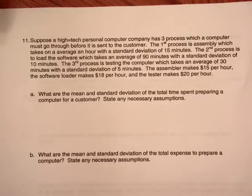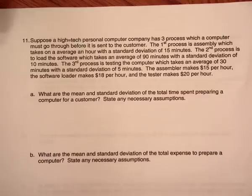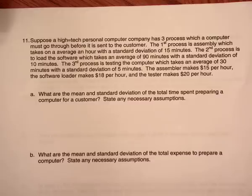A high-tech personal computer company has three processes the computer must go through. The first process is assembly, which takes an average of one hour with a standard deviation of 15 minutes. The second process is software, which takes 90 minutes with a standard deviation of 10 minutes. The third process is testing, which takes 30 minutes with a standard deviation of five minutes. The assembler makes $15 an hour, the software loader makes $18, and the tester makes $20 per hour.